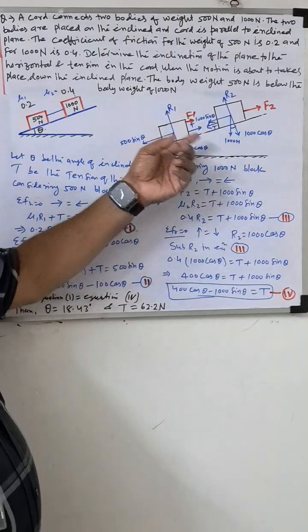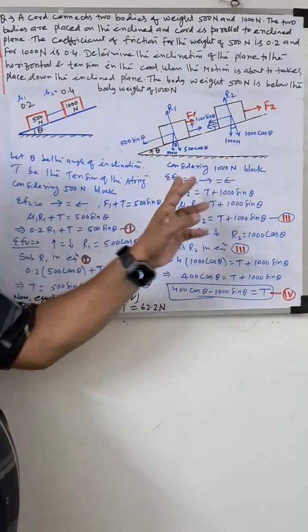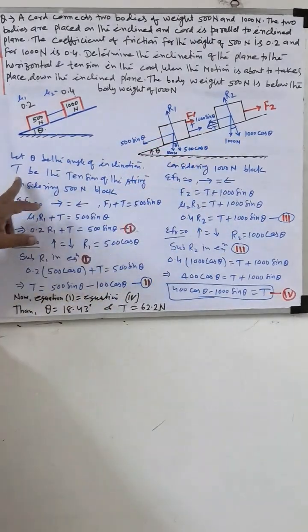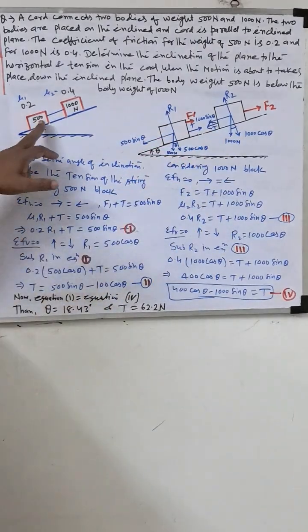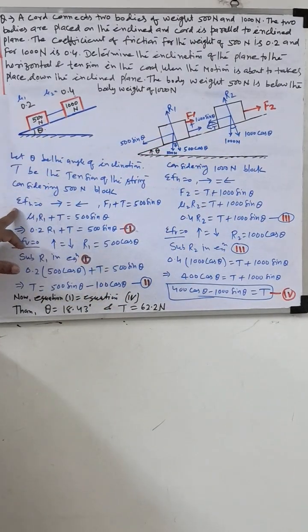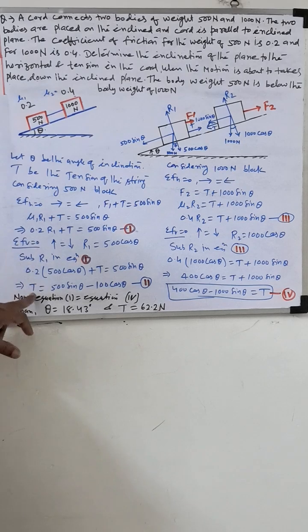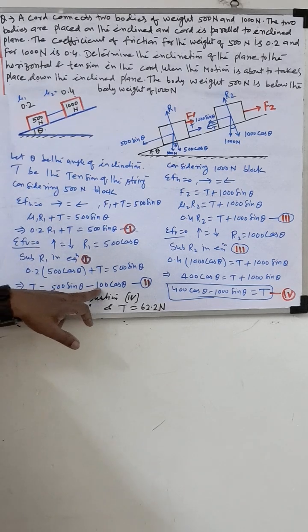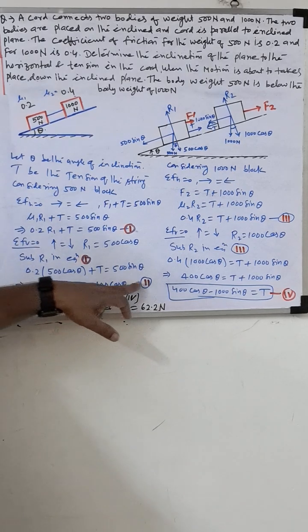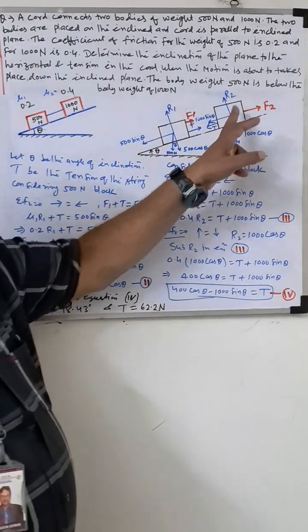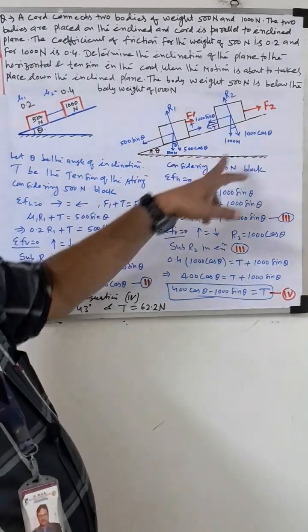We apply the two equilibrium equations. For the 500 newton block, we get two equilibrium equations and find that T is equal to 500 sine theta minus 100 cosine theta. This is equation number two.